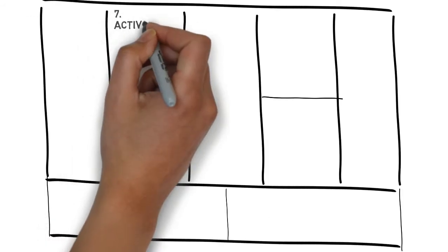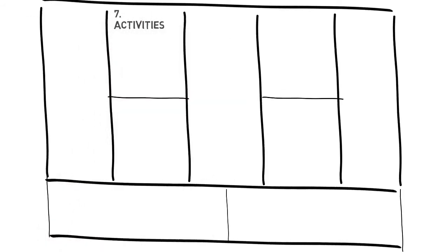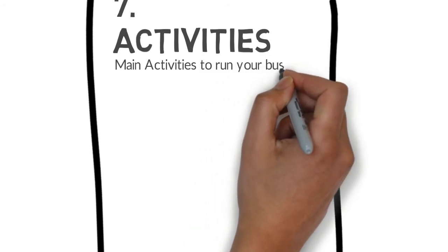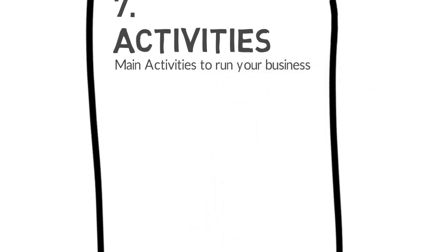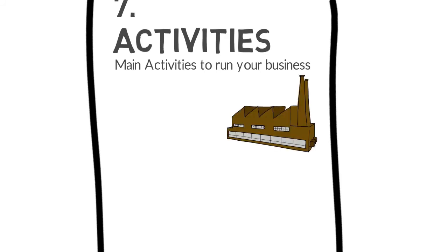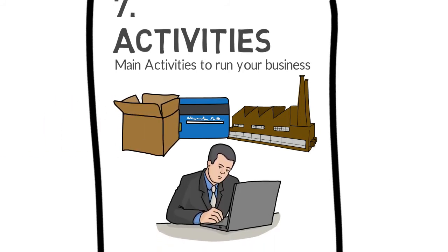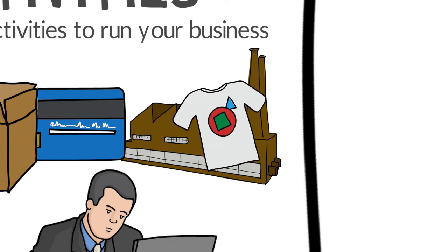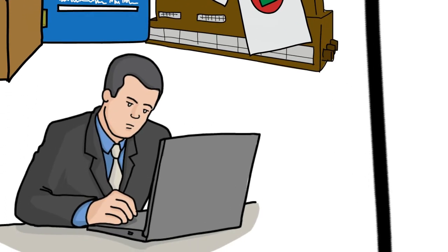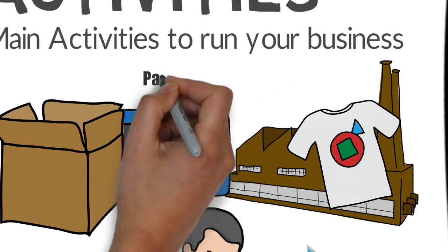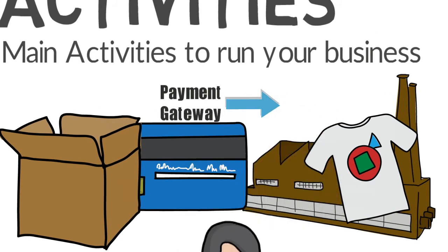The seventh is key activities. Key activities describes the most important things a company must do to make its business model work — the most important activities to run the business. These can include manufacturing a product, currency exchange, delivering supplies or transportation, consultation, teaching, or anything else. For example, if you are a t-shirt manufacturing company, then the key activity would be production of t-shirts. If you are running a consultancy business, the key activity would be problem solving. If you are a payment gateway, the key activity would be doing transactions.